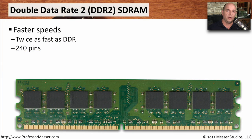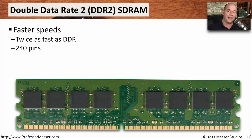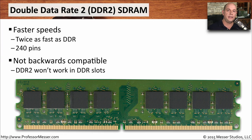DDR memory was an improvement over SDR because we got twice the throughput, but faster processors required much more throughput. So we came up with the next generation called DDR2, or Double Data Rate 2, which is twice as fast as the original DDR memory. These memory modules are 240-pin modules. These newer DDR2 modules were not backwards compatible with older DDR motherboards — you couldn't put a DDR2 module into an older motherboard expecting DDR memory. You have to make sure you're using exactly the right kind of module for your motherboard.